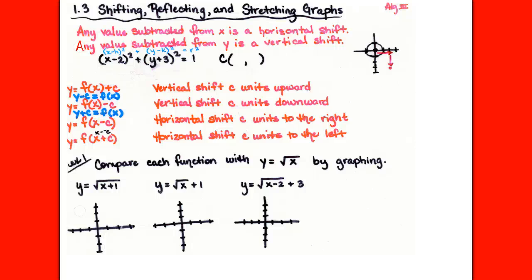So page 100, section 1-3. Before we left to go to chapter 9 and the appendices, the last section that we did was 1-2. So we are coming back and picking up with section 1-3, page 100. On page 100, there are six graphs that you need to know. Those should be graphs that you're already fairly familiar with. The first one is a horizontal line — the graph of a constant is always going to be a horizontal line.